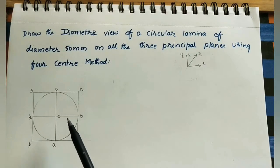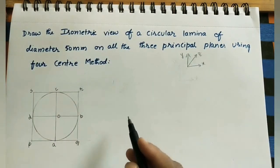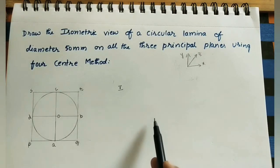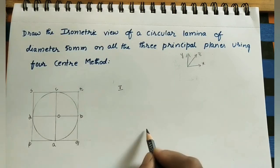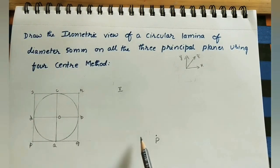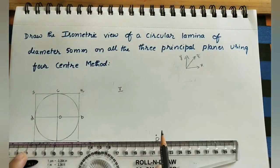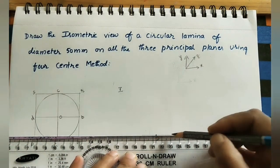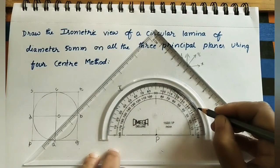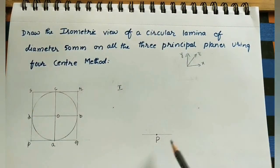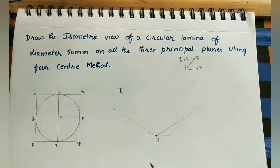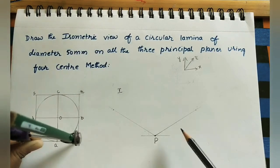This is the two-dimensional orthographic view. To convert it into isometric view we have two methods. In the first method, take the initial point P at any place. In isometric views we use capital letters. After marking P, draw a small horizontal reference line. Then draw one inclined line at 30 degrees to each side of P - take 30 degrees this side and 30 degrees that side using a protractor. Mark the PQ length on the inclined line using a compass - this gives point Q.